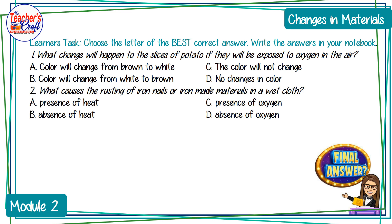Number two: what causes the rusting of iron nails or iron-made materials in a wet cloth? A — presence of heat; B — absence of heat; C — presence of oxygen; or D — absence of oxygen.